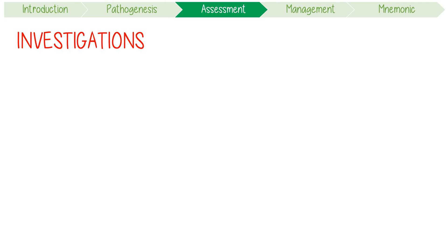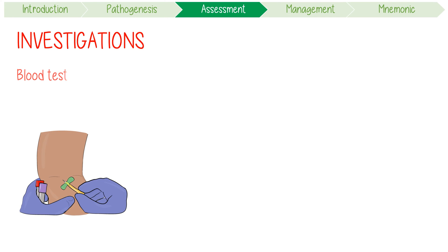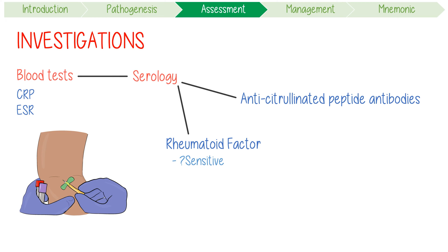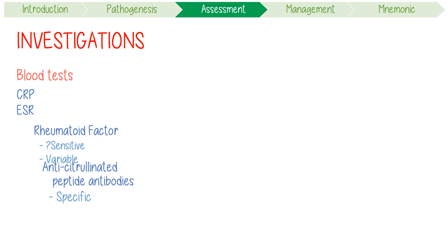Investigations can also aid diagnosis. In terms of blood tests, CRP and ESR are usually high. We have two main serological markers: rheumatoid factor and anti-citrullinated peptide antibodies, also known as anti-CCP. RF has historically been taught as the sensitive but non-specific test, while anti-CCP is often thought to be the specific one. From up to date, RF actually has a super variable sensitivity and positive predictive value and has less utility than previously thought.